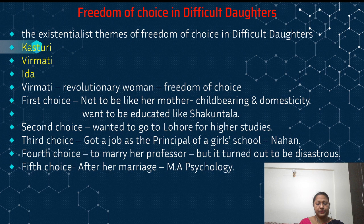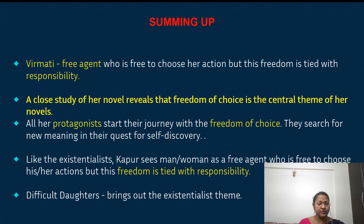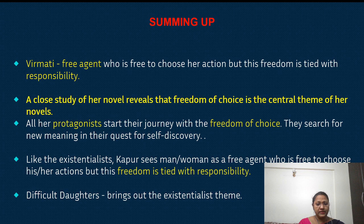Despite all her difficulties, Virmati stands firm. The fifth important choice she makes is to continue her higher education in psychology even after her marriage. As a result of all these choices, she takes full responsibility for facing her critical moments — the responsibility rests entirely on her shoulders. Virmati is thus portrayed as an existentialist figure, and the theme of freedom of choice is clearly reflected in Manju Kapoor's novel through her character.